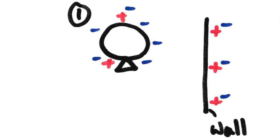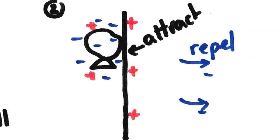Another example: imagine the charged balloon has six negatives and two positives, giving it a negative charge. If you bring it up towards a wall, the negatives in the wall are repelled and move away, leaving behind a positive charge on the wall's surface. Because the balloon is negatively charged, it is attracted towards the positive wall and the balloon will stick to the wall — something you may have tried at home.